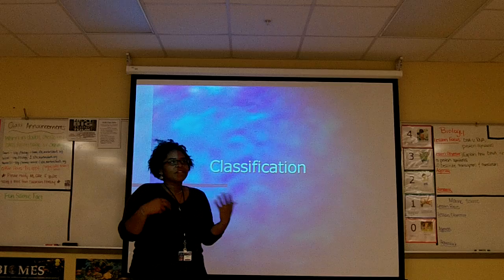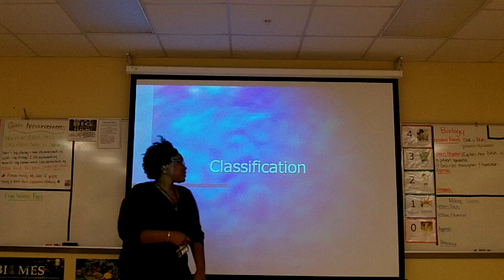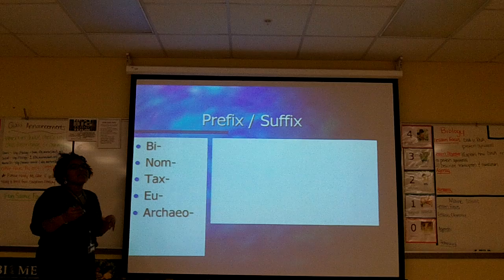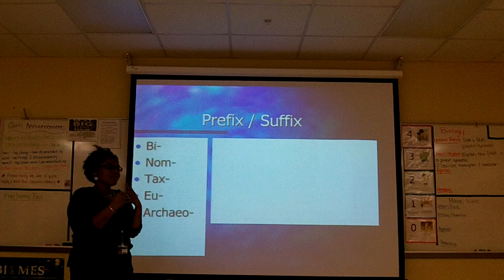So we're going to start with classification. Before we start, there are a couple of terms you might want to know: bi, gnome, tax, u, archaio. These are not in the lecture notes, but these are terms you might want to write down somewhere on the side because you will see them again.